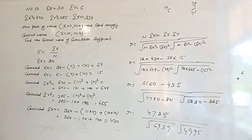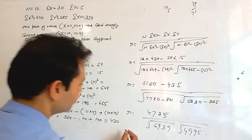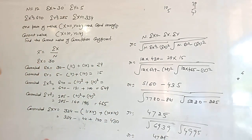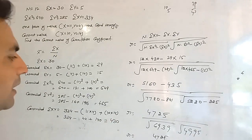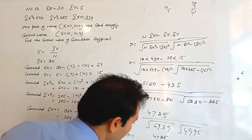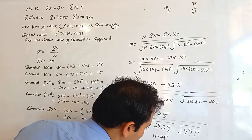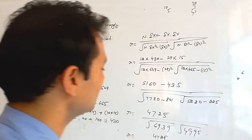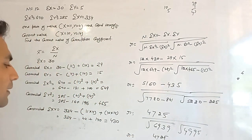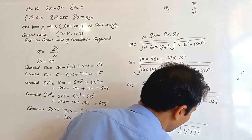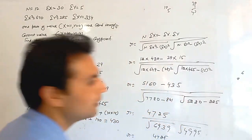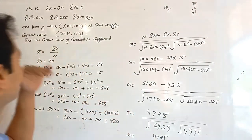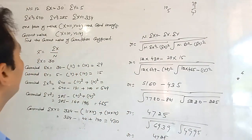Now we calculate the under root values. After calculating the under roots, we multiply both the values to get 6995. Now we divide 4725 by 6995, and the value is 0.7746. This is the complete procedure of calculating the correlation coefficient when we are given incorrect values and their correct replacements.